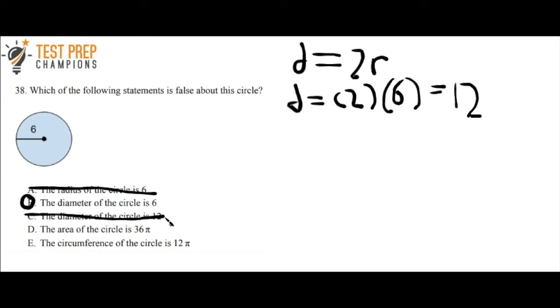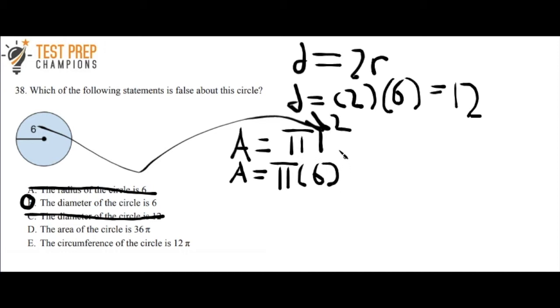Now D says the area of the circle is 36π. You have to know the formula, which you'll be given on your GED test, but you need to know how to use it. The formula is A = πr². All you do is plug in what we know for the radius. By plug in, I mean take this 6 and put it into the formula. So we have π times 6 squared, and 6 times 6 equals 36.